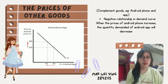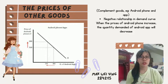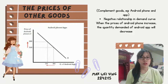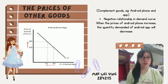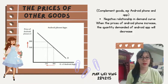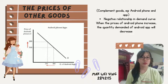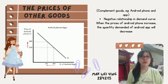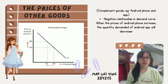For complement goods — goods that need each other to carry out their functions — consider Android phones and Android apps. They have a negative relationship in demand. When the price of Android phones increases, the quantity demanded for Android apps decreases, because fewer people use Android phones, resulting in fewer consumers downloading apps.